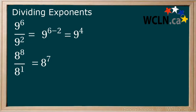One last example. 4 to the power of 7 divided by 4 to the power of 0. 7 minus 0 is 7, so our answer is 4 to the power of 7.